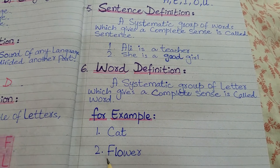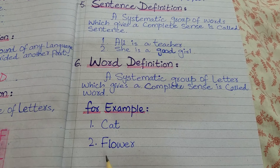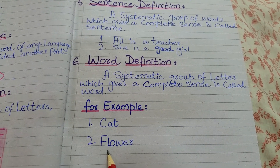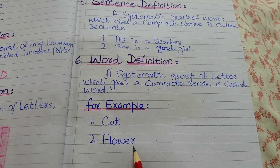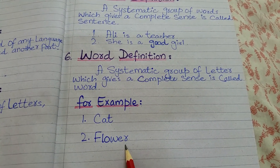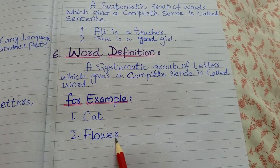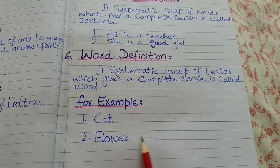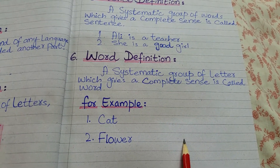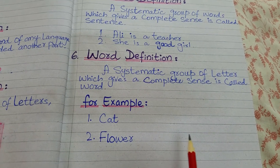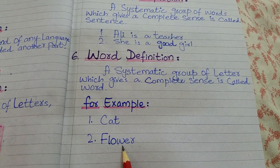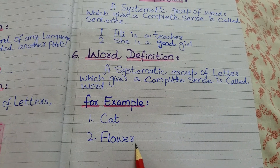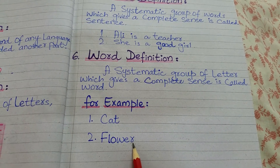Second example: 'flower' — F, L, O, W, E, R — 6 letters milke ek word ban raha hai jo ek complete sense de raha hai, it's called a word. If you reverse it — R, E, W, O, L, F — this is not a word, it does not give a complete sense. So the actual word is 'flower,' which gives a complete sense and is a complete word.